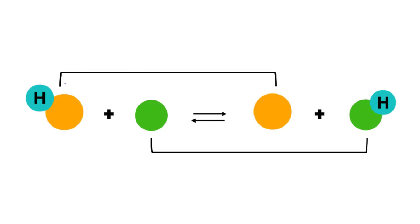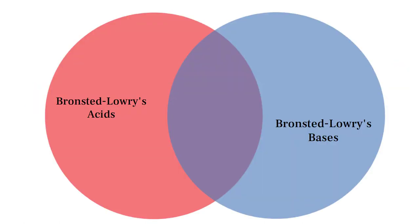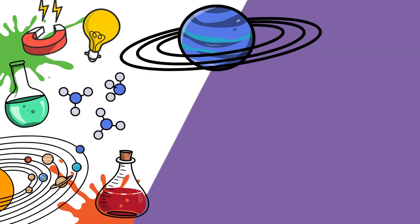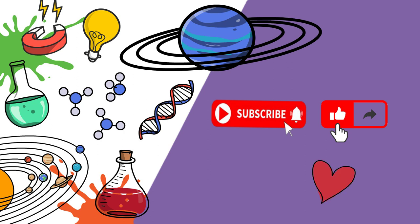In this part, we learned how to identify conjugate pairs. We also learned how to find the formula of the conjugate acid and the conjugate base. In the third part of the Bronsted-Lowry concept, we will get acquainted with amphoteric substances and summarize the acids and bases covered by the Bronsted-Lowry concept. Big thanks for watching — don't forget to like, share, and subscribe to receive new videos. Bye!